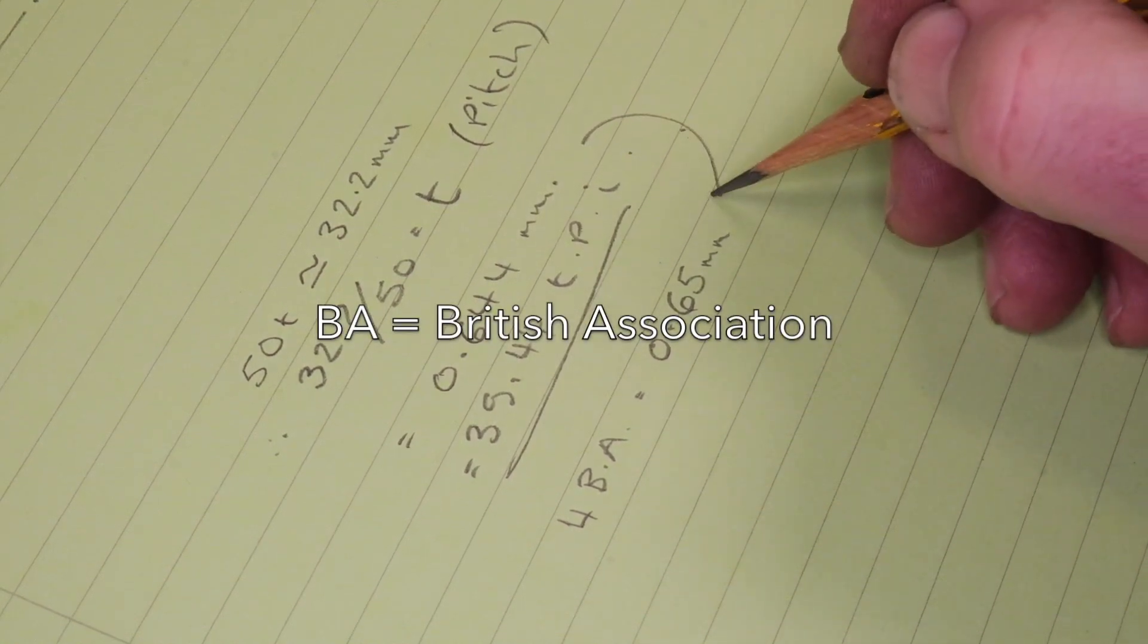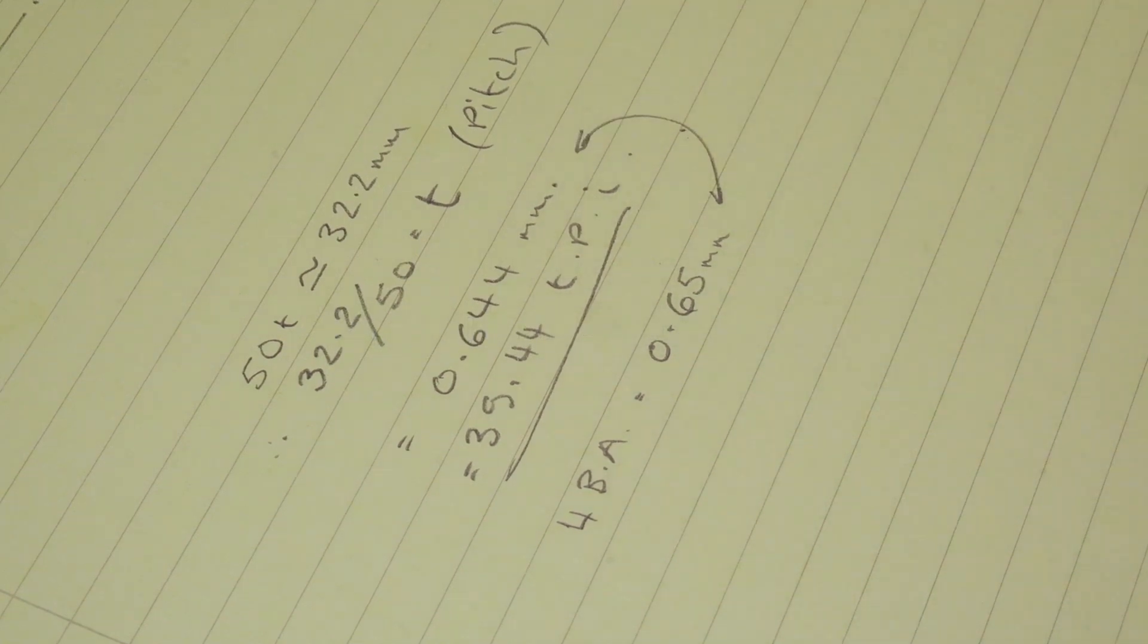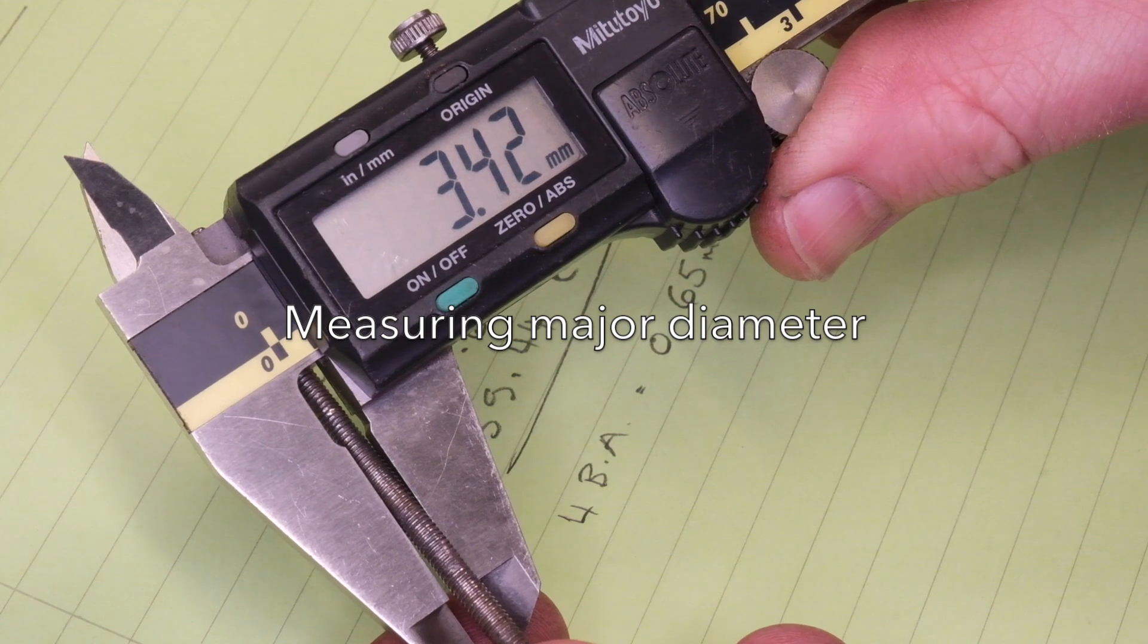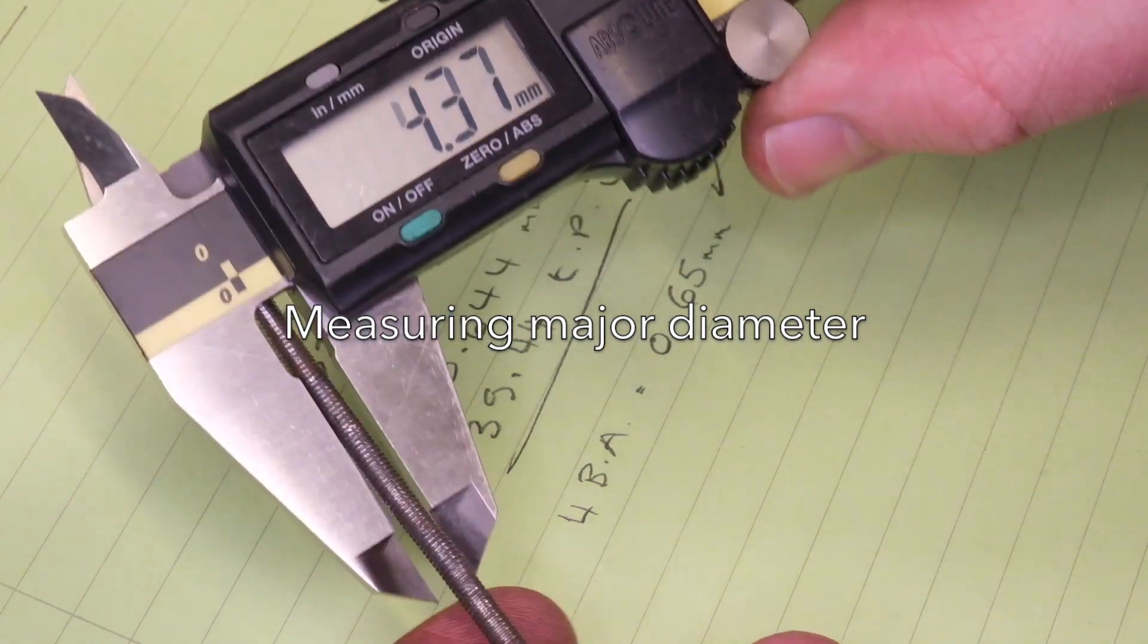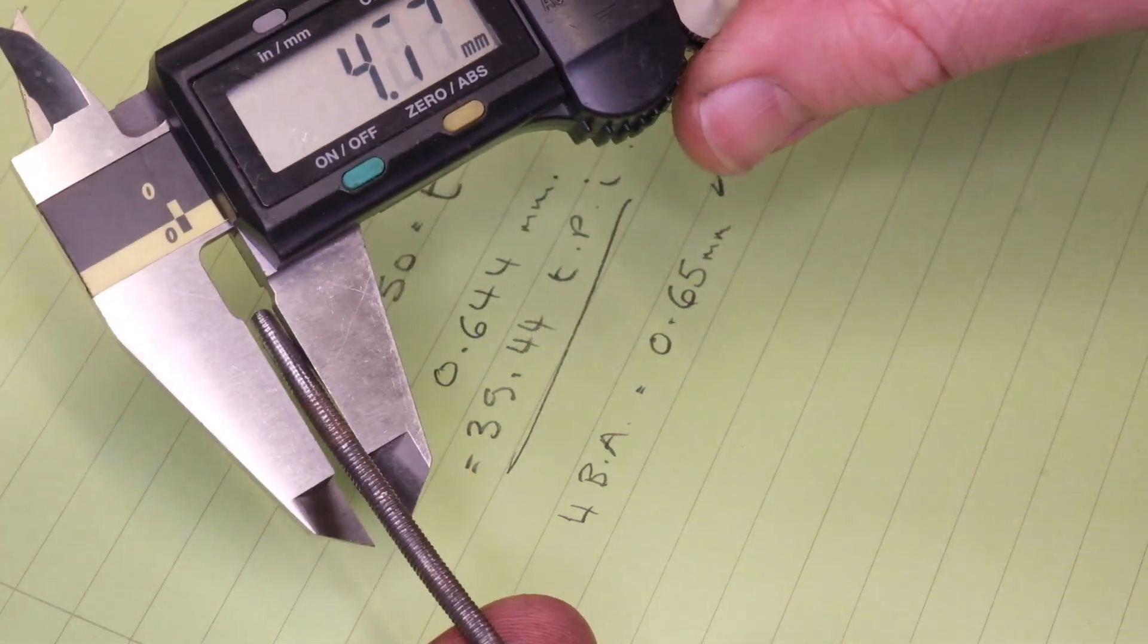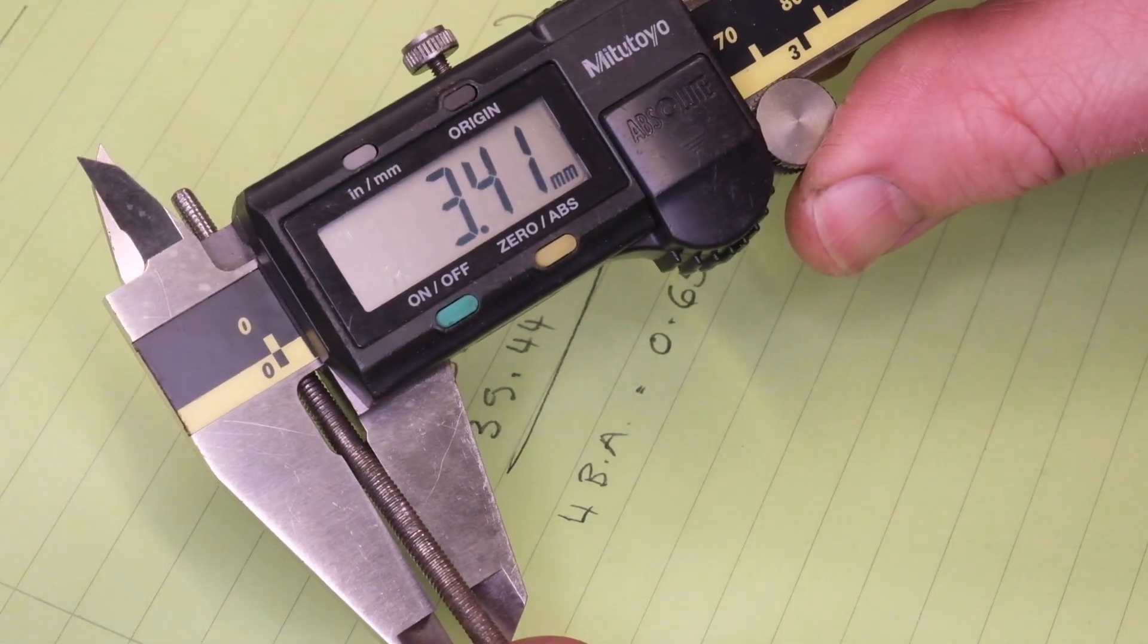Many people watching this will be familiar with BA thread standards that were developed towards the end of the 19th century based on a Swiss metric system and they were used extensively in the 20th century for clocks and instrument making.